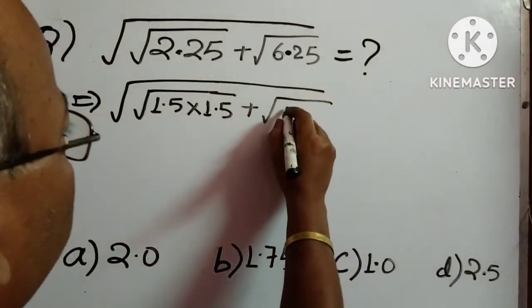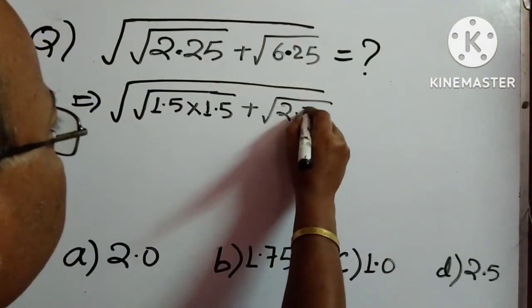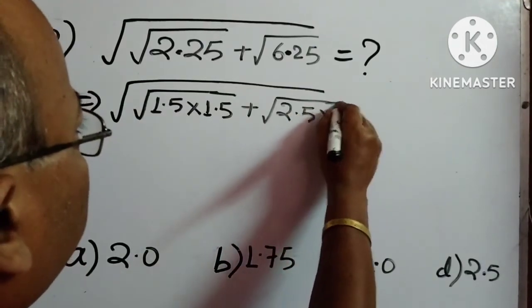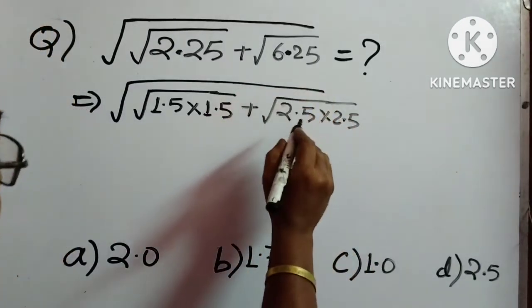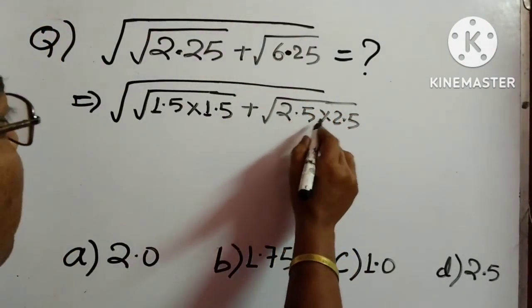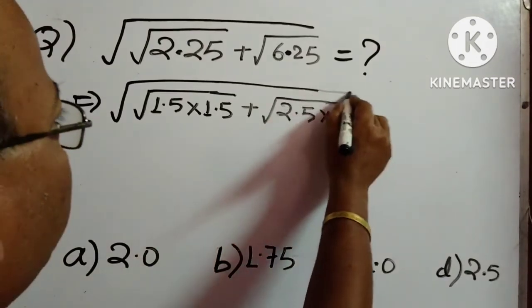6.25 can be written as 2.5 into 2.5. 2.5 into 2.5 is 6.25. So here we have to write 2.5 into 2.5.